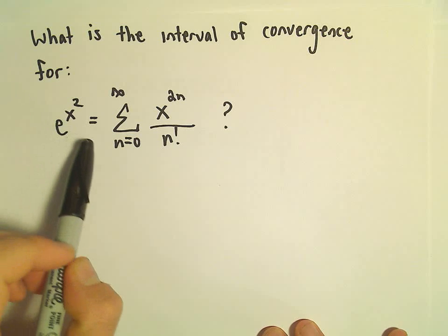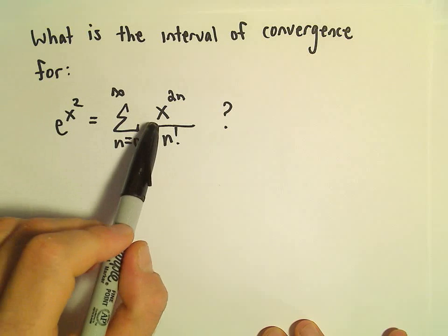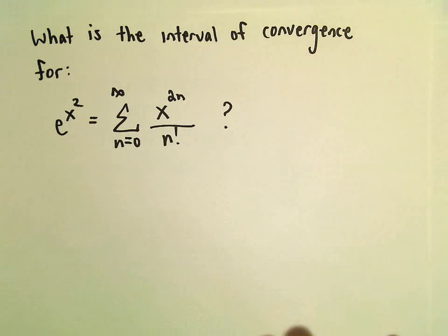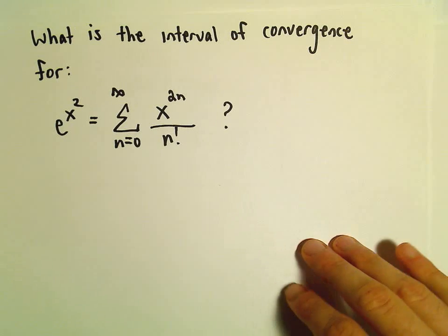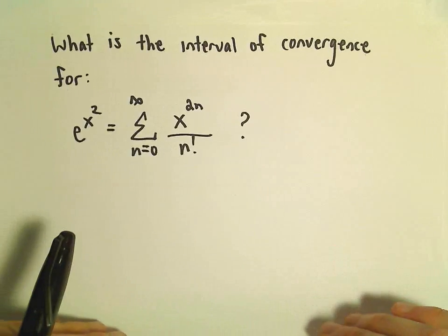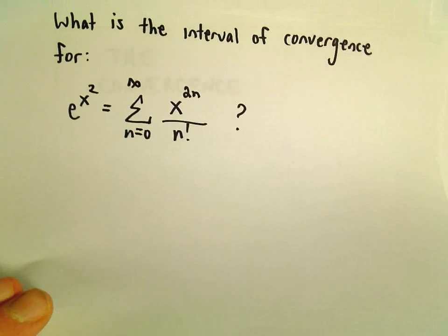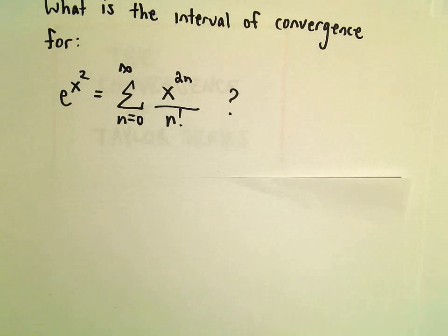the series representation for e to the x squared, which is n equals 0 to infinity, x to the 2n over n factorial. What we're going to do to find this interval of convergence is we're just going to use the ratio test.